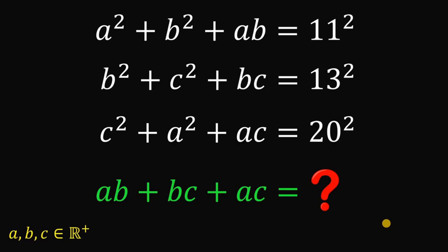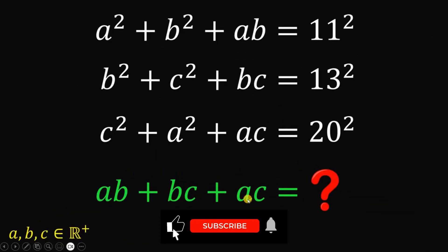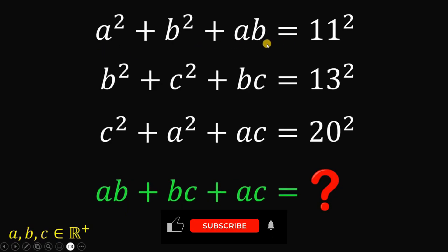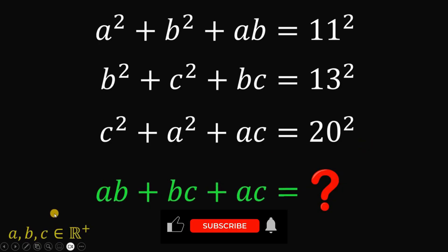For today's video, we will answer a math challenge given by one of our followers from India. The question goes like this: What is the value of AB plus BC plus AC? Given these three equations — A squared plus B squared plus AB equals 11 squared; B squared plus C squared plus BC equals 13 squared; and C squared plus A squared plus AC equals 20 squared — wherein A, B, and C are all positive real numbers.